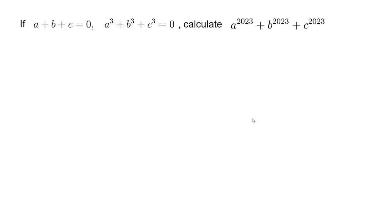Hi everyone, Wolfring here. Now here's today's algebra problem. If we know a plus b plus c equals zero and a³ plus b³ plus c³ equals zero, we want to calculate this expression: a²⁰²³ plus b²⁰²³ plus c²⁰²³.